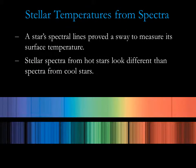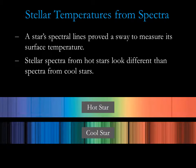A star's spectrum provides a second and more accurate way to measure surface temperature. Spectra for hot stars look different from the spectra of cool stars. The types of spectral lines present in a star's spectrum can provide us a direct measure of the star's surface temperature.